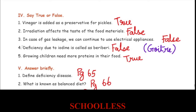In case of gas leakage, we cannot continue to use electrical appliances — that is False, we should not use electrical appliances. Deficiency due to iodine is called beriberi — False, iodine deficiency causes goiter. Growing children need more proteins in their food — Correct, protein is the building block of our body.